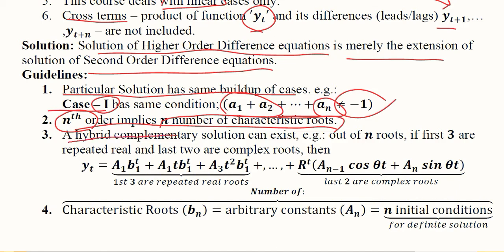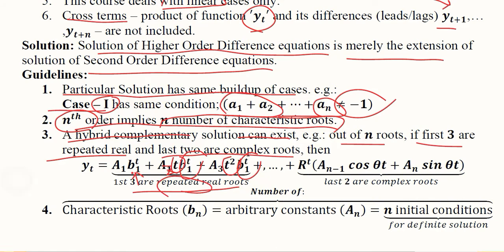A hybrid complementary solution can exist. For example, if we have n roots and the first three are repeated real roots while the last two are complex, the first three roots — with arbitrary constants a1, a2, and a3 — involve b1 raised to the power of t, then b1^t multiplied by t, then b1^t multiplied by t-squared. In the repeated case, the first term has t to the power 0, the second has t to the power 1, and subsequent terms get t-squared multiplied.